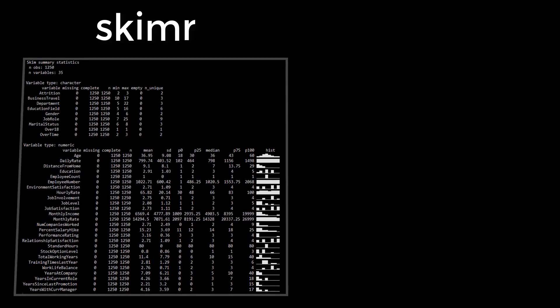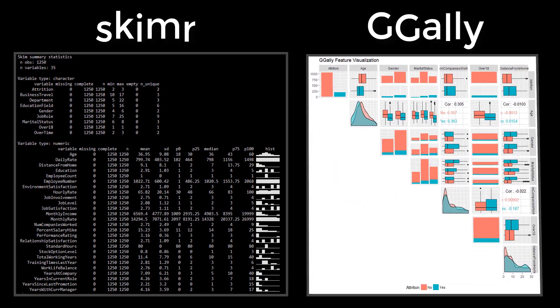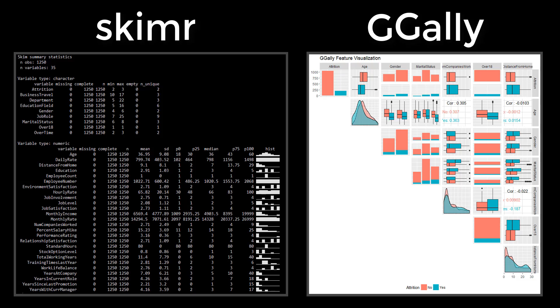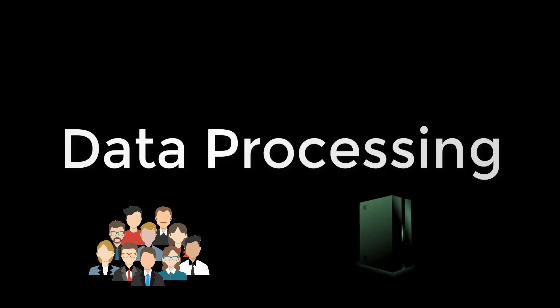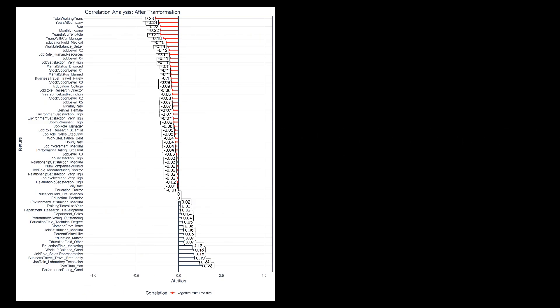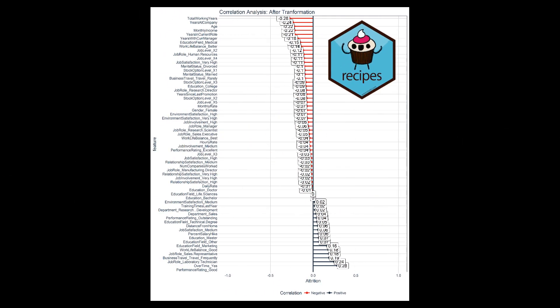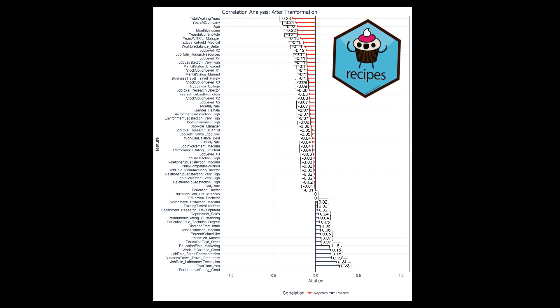Next, we learn about the data using Skimmer and GGAlley to assess variables and their interactions with attrition. Next, we process the data for both people and machines. We make extensive use of the recipes package to properly transform data for a pre-modeling correlation analysis.